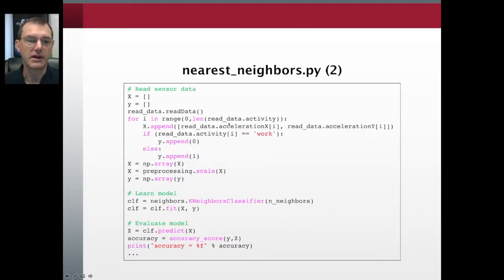First, we'll read in our sensor data. We're looking at two dimensions: the x and y acceleration values. x will be an array where each element is a pair of x and y acceleration values. y will contain the correct classes for those examples. Since scikit-learn works exclusively with numbers, we convert activities from strings to numbers: work is 0, play is 1. We convert those to numpy arrays and scale our data so all dimensions have about the same variance.